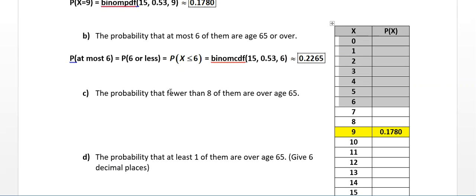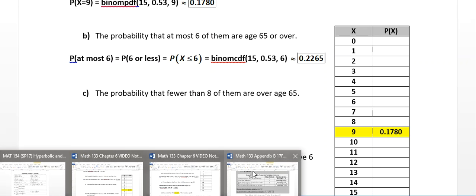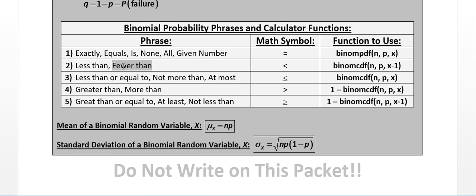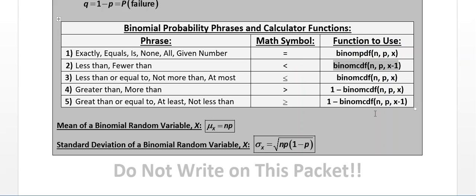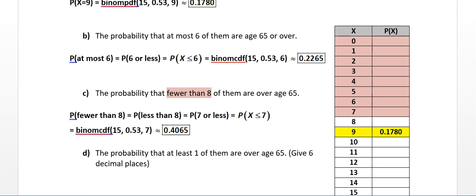Now for part C, I want the probability that fewer than 8 are over age 65. 'Fewer than' means strictly less than 8, so I'm going to use binomCDF with 15 and 0.53, but instead of 8, I put in 8 minus 1, which is 7. I want the calculator to add up all the values that are less than 8 — starting at 0 and going up to 7, stopping at 7.